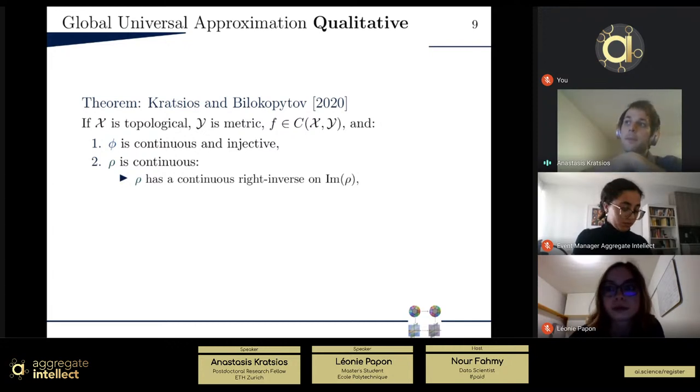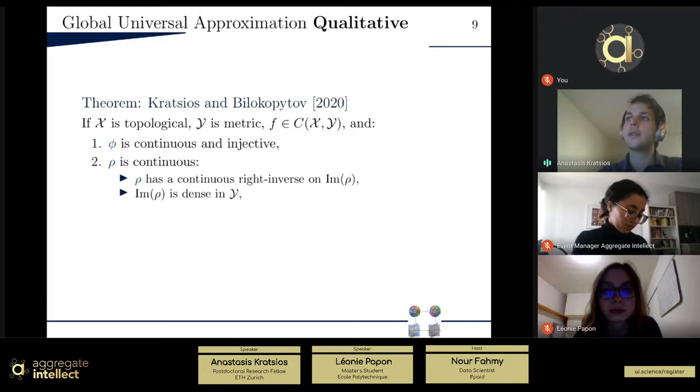The first is that on its image, so where that feature map parameterizes, this should, of course, it has a right inverse because it's subjective, but we want that right inverse to be continuous. The second thing you'll kind of see throughout the machine learning literature, maybe not in this phrasing, but the spirit of it is there, is that the image should grab most of the space. So in other words, you should be able to parameterize almost all of Y. What that means is it should be dense.